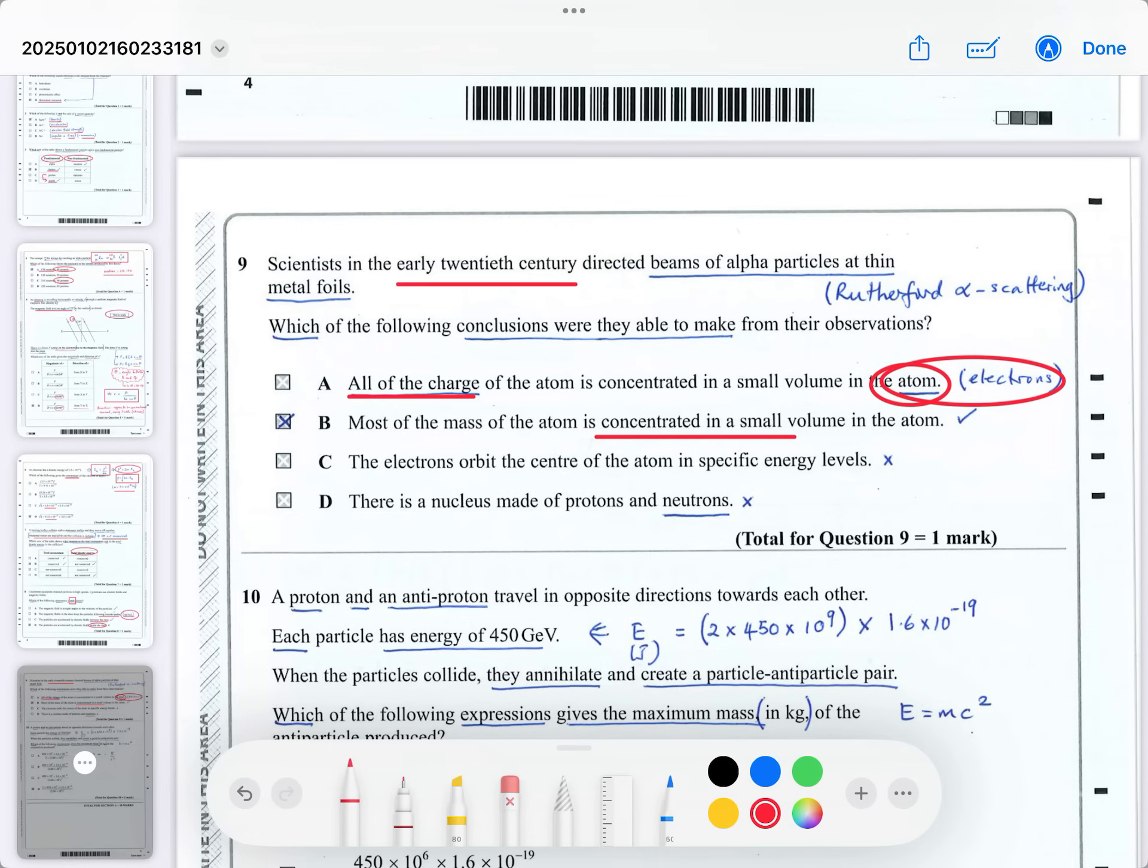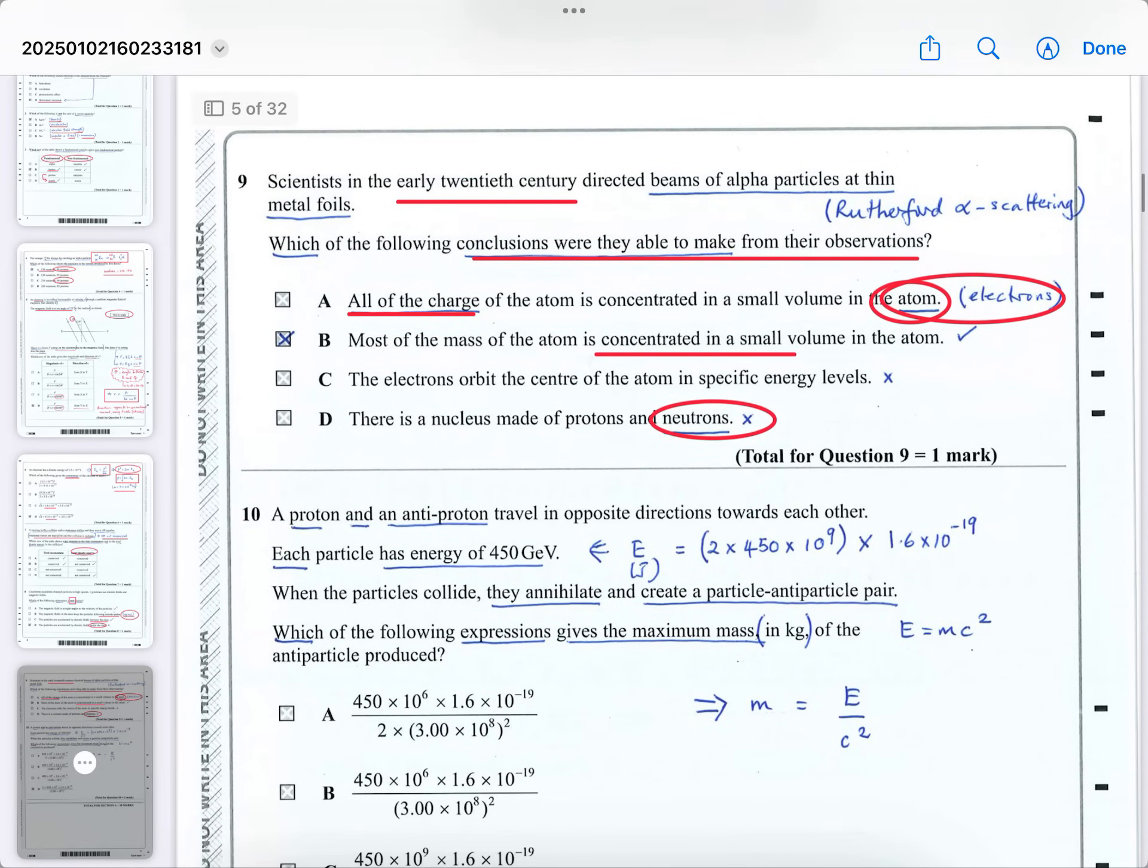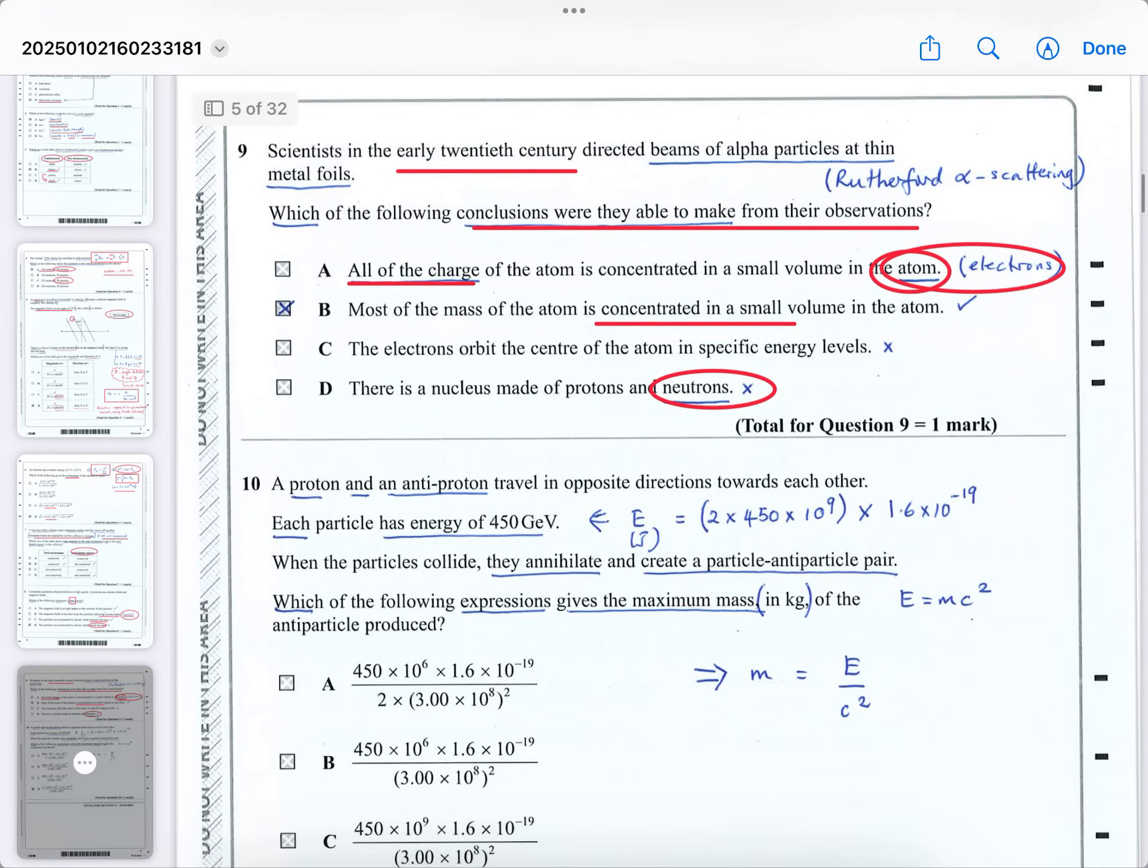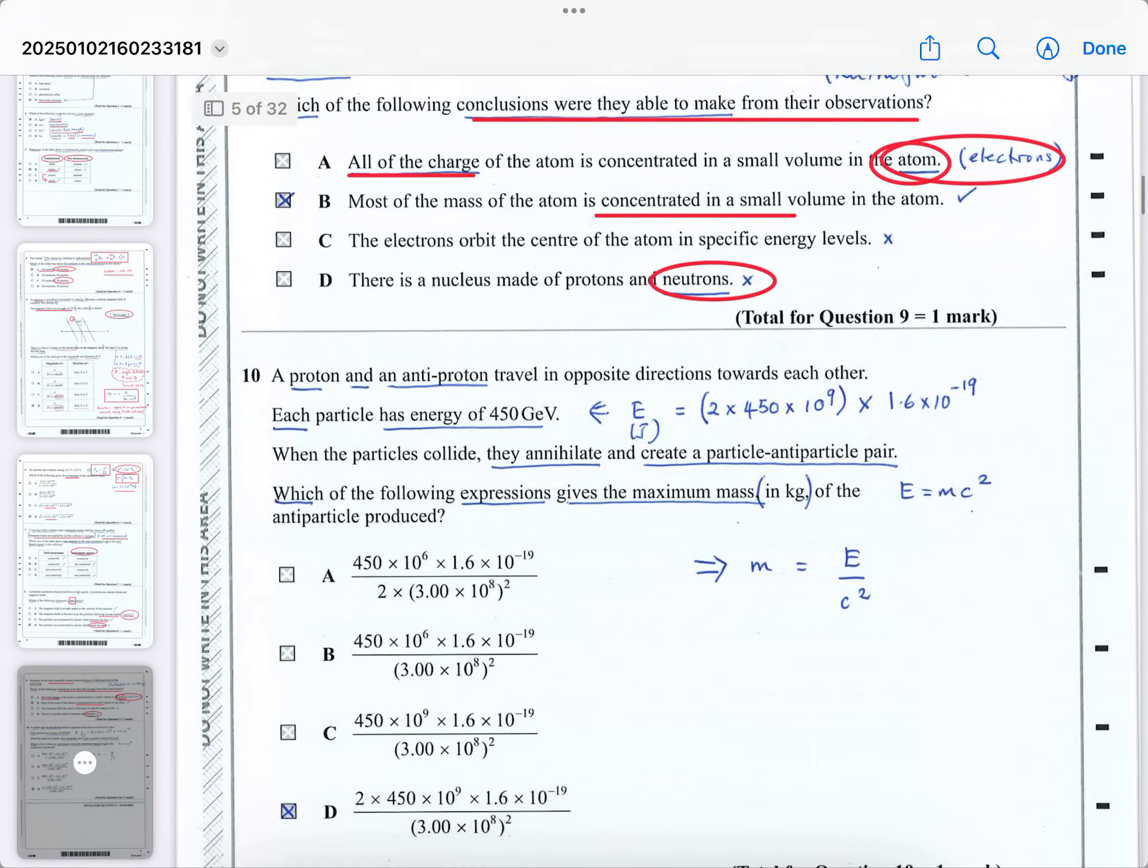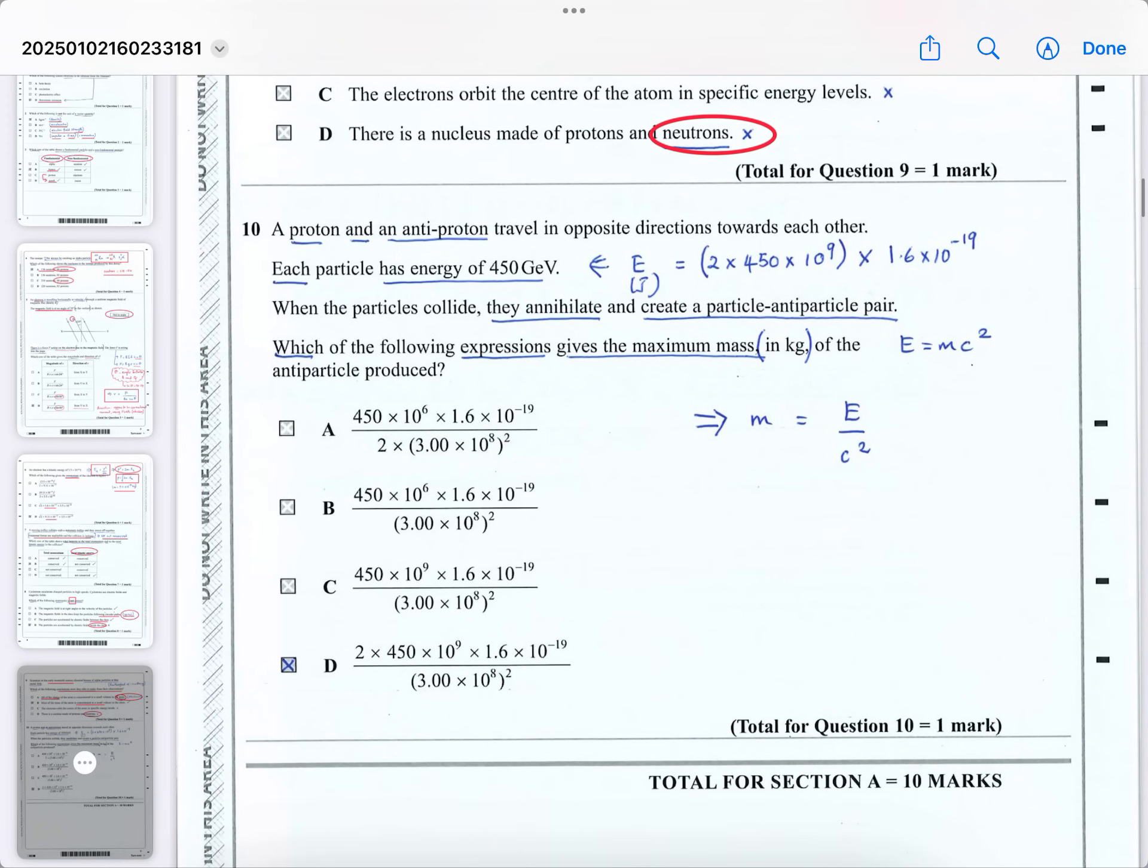But question C, let's see if it's wrong. The electrons orbit the centre of the atom, that's true. In specific energy levels, that's true, but it's not one of the conclusions from the Rutherford Scattering Experiment. They're not saying which of the following are true, they're saying which of the following conclusions were they able to make from the Rutherford Scattering Experiments, from their observations of that particular experiment. And part D is wrong because it says there is a nucleus made of protons and neutrons. Well, the neutrons were not discovered until 20 years later. So be careful. You need to know the details of this experiment. It's another very common question for unit four. You need to know the observations, the equipment they used, and the conclusions they drew from the observations they made. You need to know the details. Remember, what gets you marks in the exams is depth, detail, and clarity.